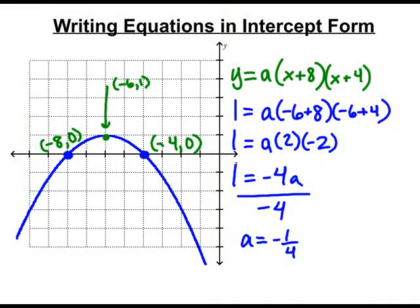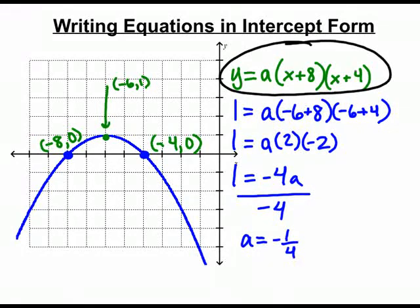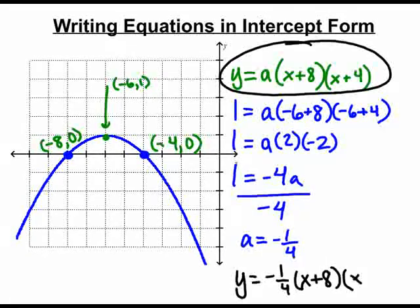That will now give us all the information we need. Our original equation up here is y equals my a value, negative 1 fourth. And then two sets of parentheses, x plus 8 and x plus 4.